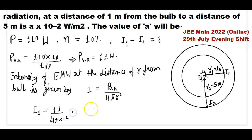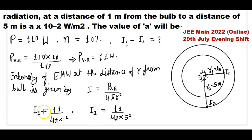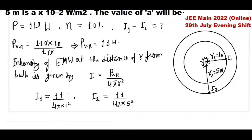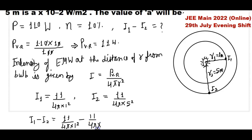The intensity at the point 5 meters from the bulb is given by the power of visible radiation — value 11 — divided by 4π r2 squared, where r2 equals 5 meters, so divided by 4π into 5 squared. We now calculate I1 minus I2: that is 11 divided by 4π × 1 squared, minus 11 divided by 4π × 5 squared.